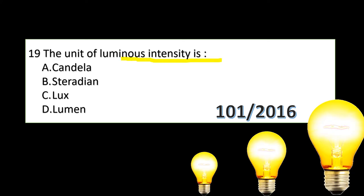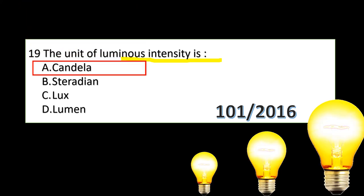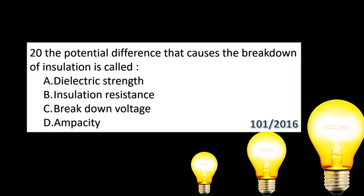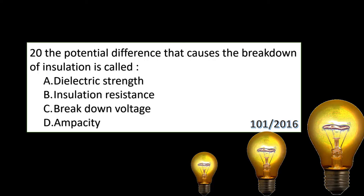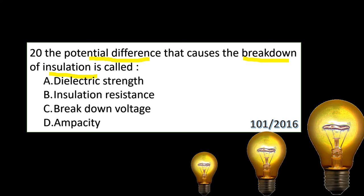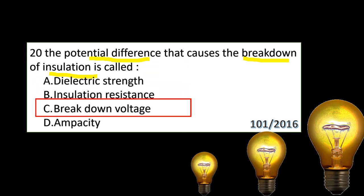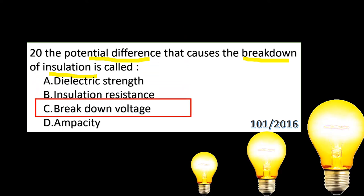The potential difference that causes the breakdown of insulation is called — options are: dielectric strength, insulation resistance, breakdown voltage, ampacity. The answer is breakdown voltage.